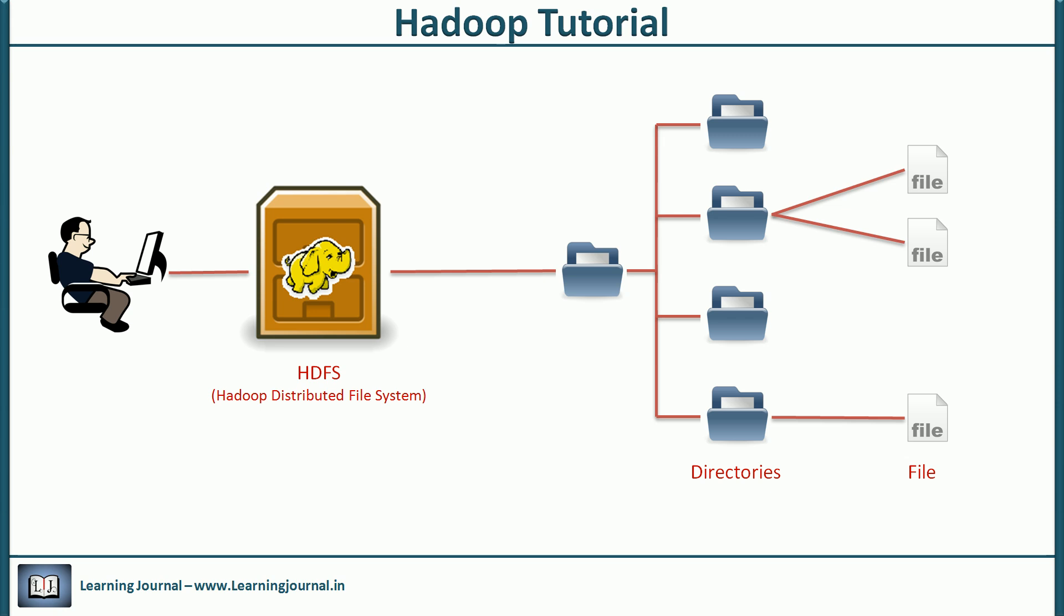You might be wondering, if it is just a File System, then why is it so popular? What was the big thing that Google published in their paper? Why people build a new File System when we already had so many of them?